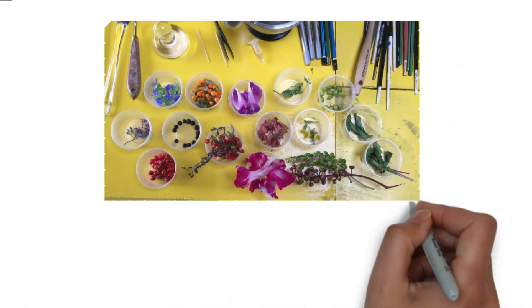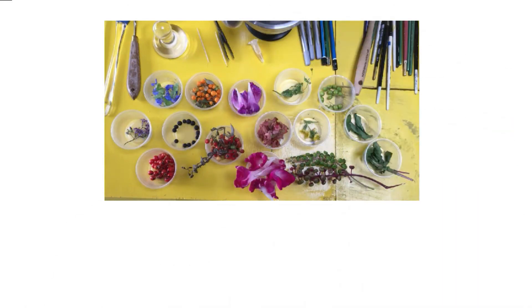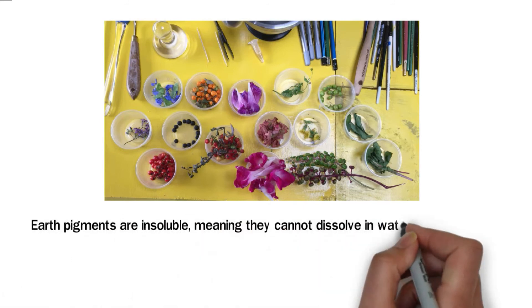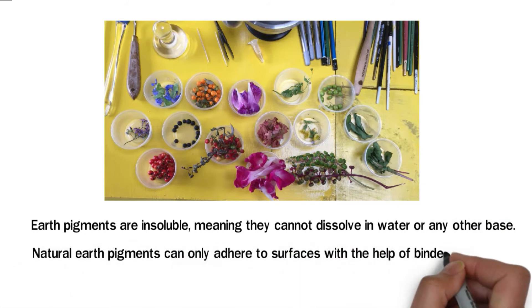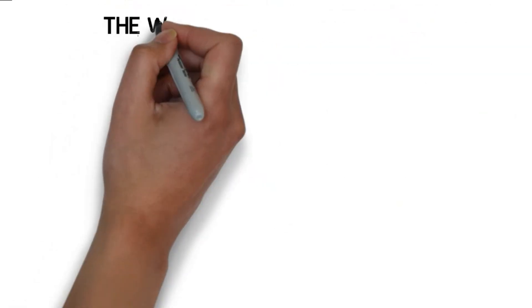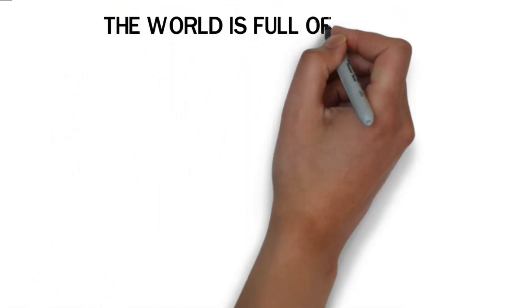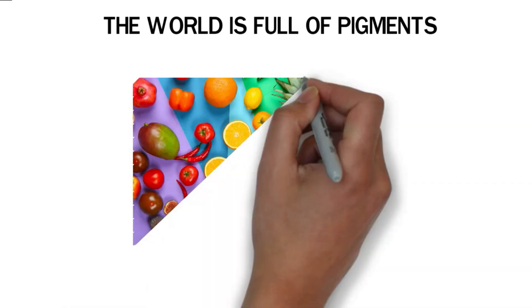You can also make dyes and paints using natural earth pigments. These pigments occur naturally and are exclusively found in mineral compounds. Earth pigments are insoluble, meaning they cannot dissolve in water or any other base, and can only adhere to surfaces with the help of binders.